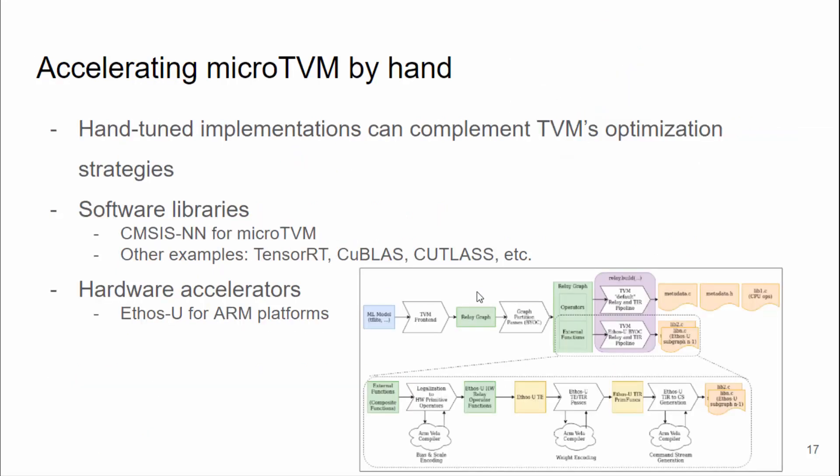Sometimes there are already hand-tuned libraries or accelerators available. TVM defines a compilation process called BYOC — Bring Your Own Compiler — which allows you to define a parallel compilation path for a subgraph of the Relay model and compile it in tandem with TVM's built-in compilation flow. Micro TVM supports offloading to pre-built libraries such as CMSIS-NN for ARM processors, and also supports offloading to accelerators such as the Ethos-U IP that ARM developed, contributed by ARM.